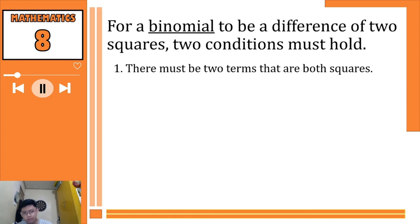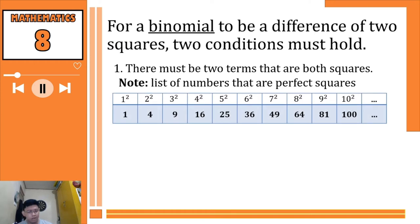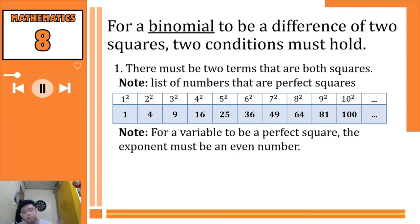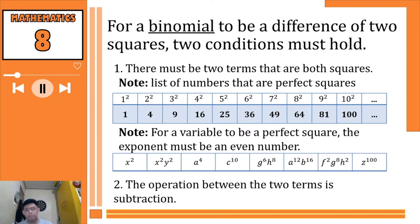The first condition is that the two terms must be perfect square terms. Please take note of the perfect square numbers: we have 1, 4, 9, and so on. For variables to be a perfect square, the exponent must be an even number. The second condition is that the operation between the two terms must be subtraction, or the minus symbol.